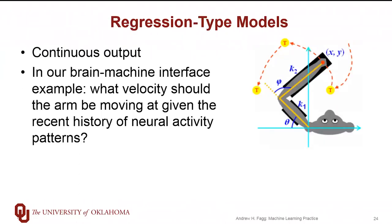Here are a couple of specific examples. For the brain-machine interface problem that we've already talked about, we are predicting the velocity of the elbow and the shoulder as a function of the recent history of neural activity. These velocity variables are continuous outputs, so applying regression types of techniques are most appropriate in this situation.